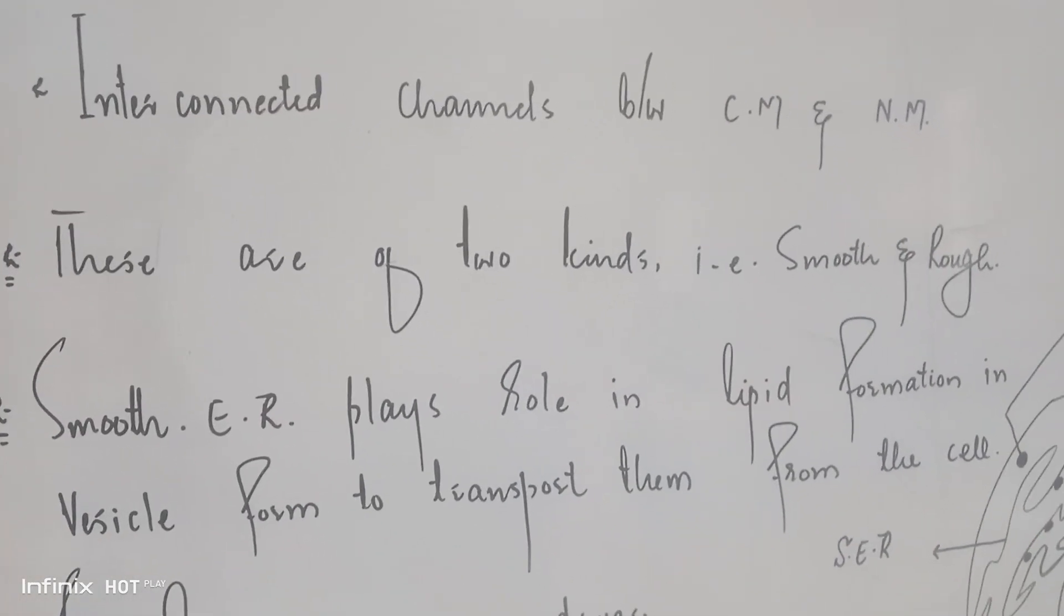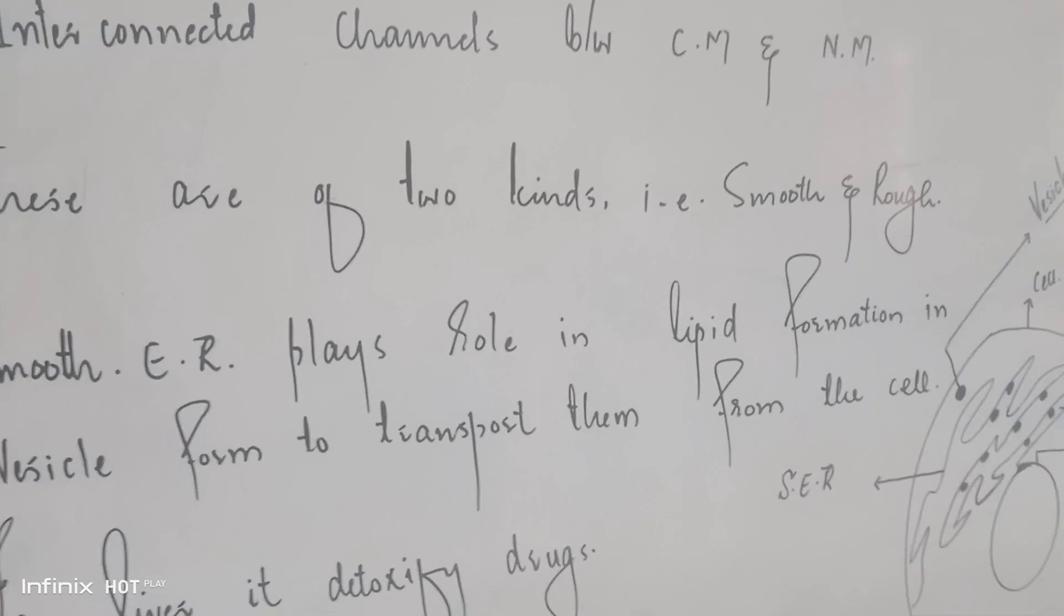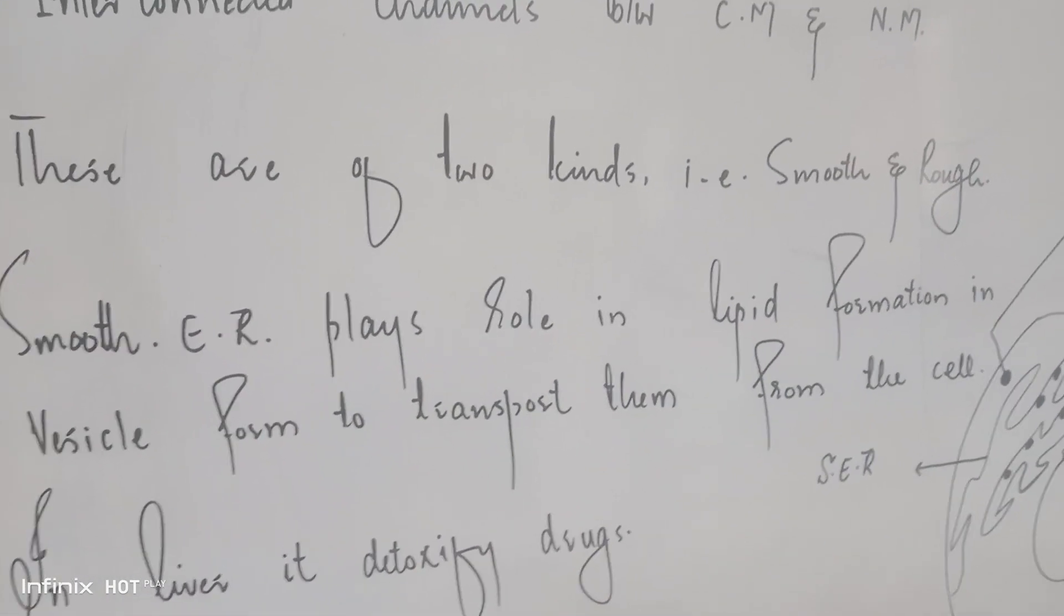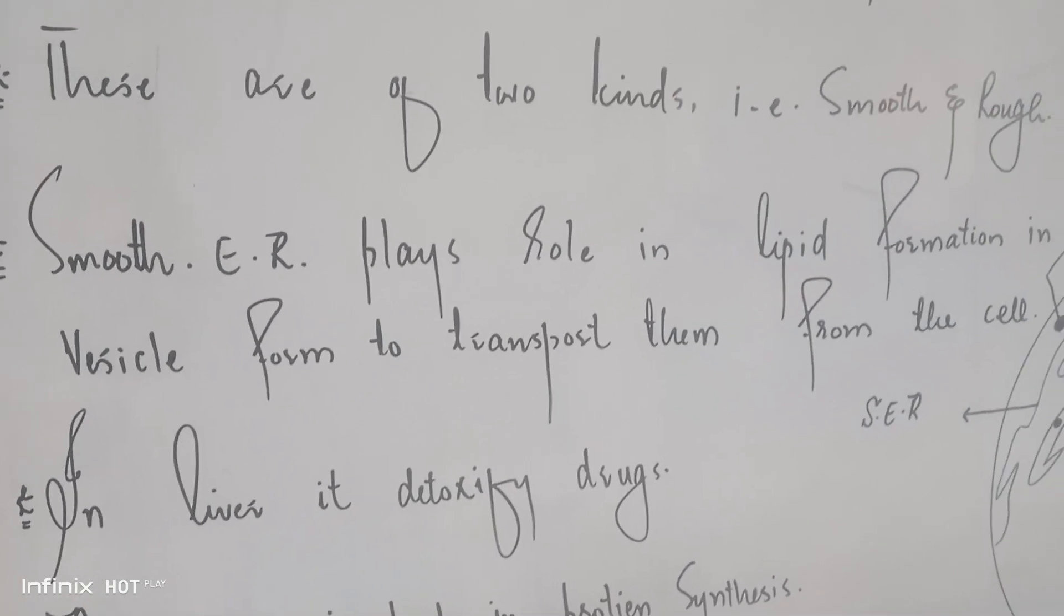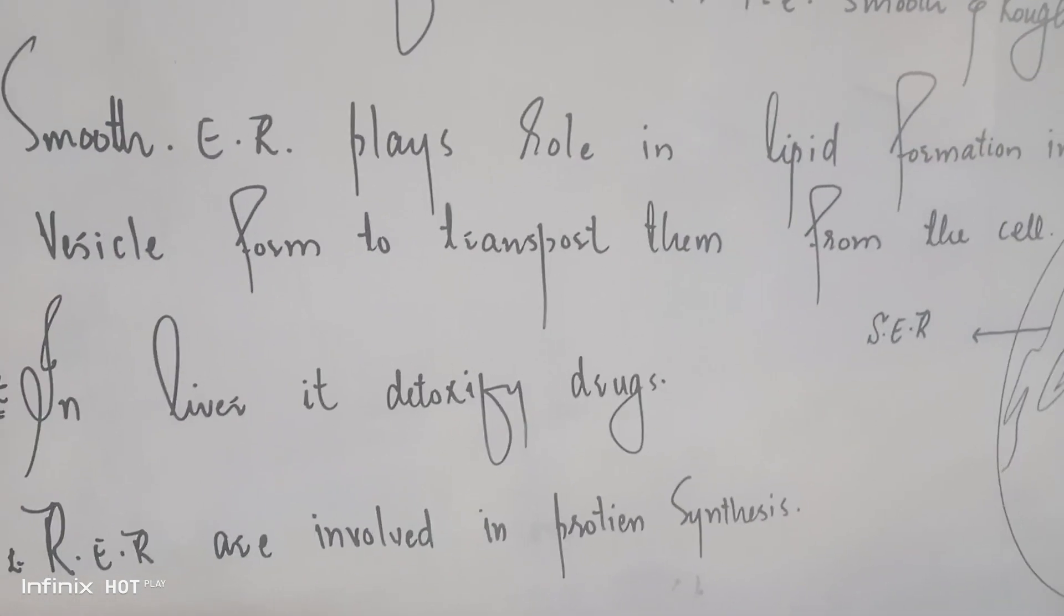Smooth endoplasmic reticulum plays a role in lipid formation in vesicle form to transport them from the cell. In the liver it detoxifies drugs. Rough endoplasmic reticulum is involved in protein synthesis.